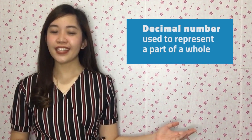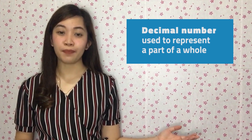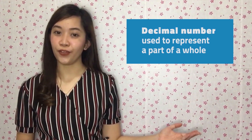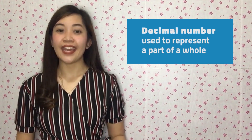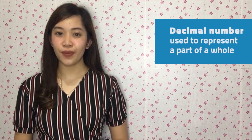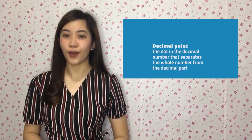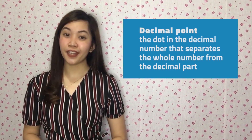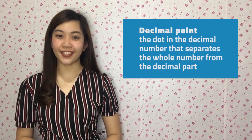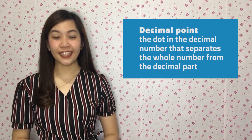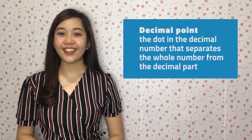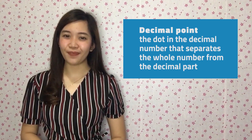A decimal number is used to represent a part of a whole. It represents values between 0 and 1. The dot in the decimal number that separates the whole number part from the fractional part, or the decimal part, is called a decimal point.